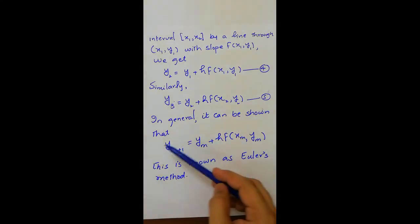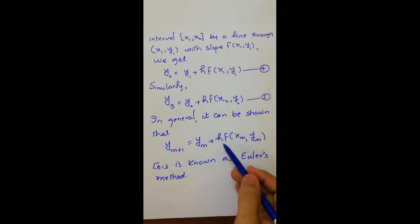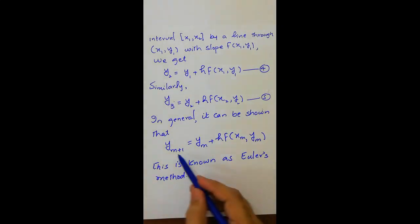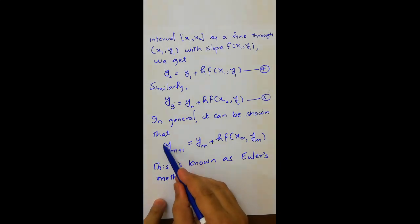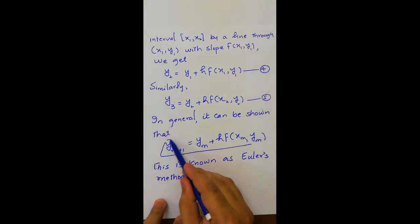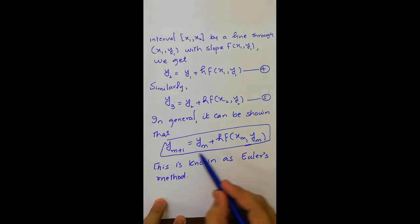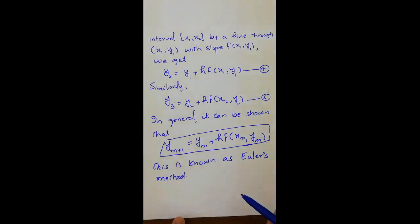In general, it can be shown that ym plus 1 equals ym plus h f of xm ym. And this is known as Euler's method or Euler's formula.